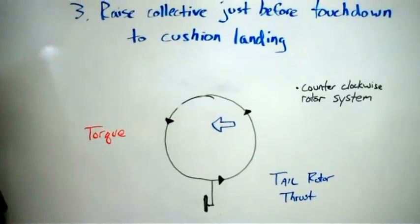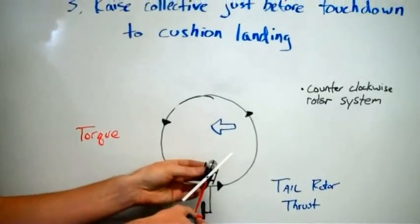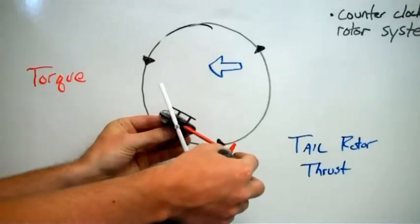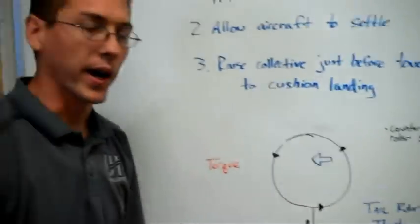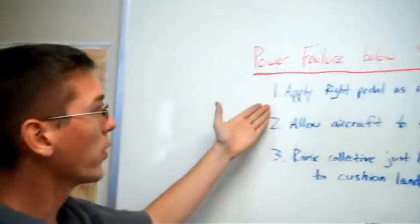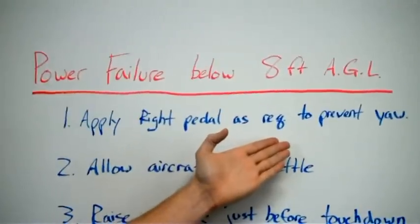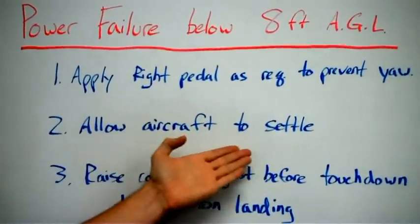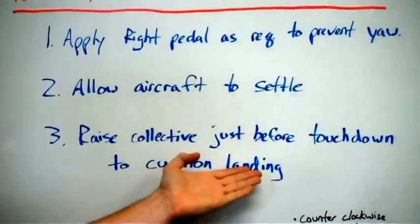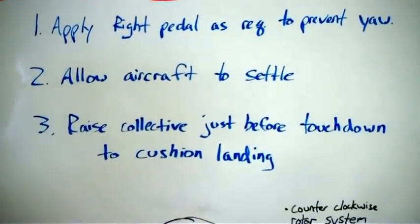And so, once that power is gone, the helicopter will then begin an immediate left-hand yaw. And so, these steps are absolutely required. The pilot will therefore apply right pedal as required to prevent the yaw, allow the aircraft to settle, and raise the collective just before touchdown to cushion the landing.